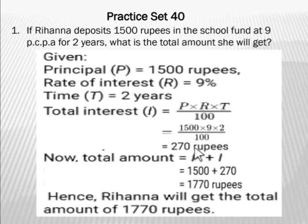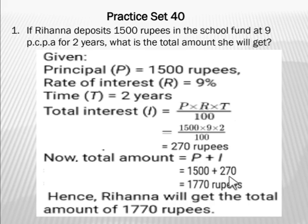15 × 9 × 2 equals 270 rupees, so she will gain an interest of 270 rupees in two years. Now we have to find the total amount, which is principal plus interest. Principal is 1500 rupees and interest is 270 rupees, so adding gives 1770 rupees. Hence Rihanna will get a total amount of 1770 rupees.